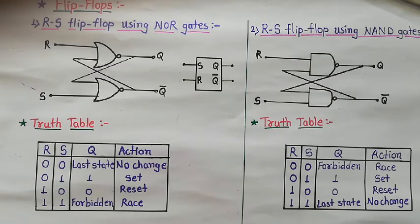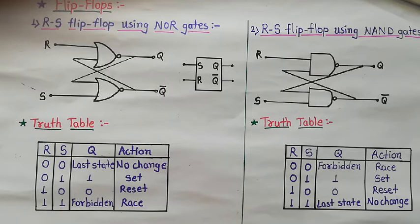Hello students. In last lecture we studied the 1-bit memory cell, the concept of clock, and the definition of flip-flop. Flip-flop is the logic circuit which has one stable state, either 1 or 0. If it is 1 it is known as set, and if it is 0 it is known as reset. The flip-flop is also known as a bi-stable multivibrator.